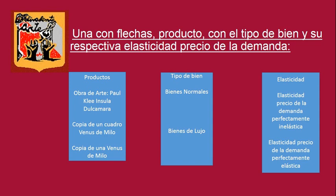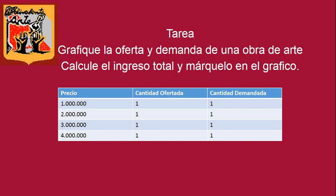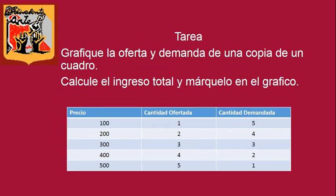Tarea: Unan con flechas el producto con el respectivo tipo de bien y su respectiva elasticidad precio de la demanda. También grafiquen la oferta y la demanda de una obra de arte, calculen el ingreso total y márquenlo en el gráfico. Finalmente, grafiquen la oferta y la demanda de una copia de un cuadro, calculen el ingreso total, márquenlo en el gráfico marcando el rectángulo y recuerden buscar el punto de equilibrio.